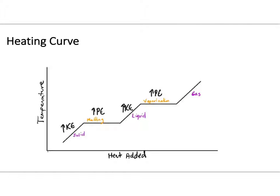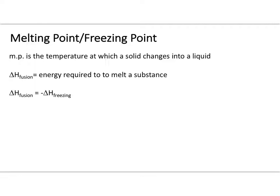This alternating process — increase in kinetic energy during a phase, then increase in potential energy during a phase change — continues along the entire heating curve. On a cooling curve, the same process occurs in reverse: instead of increases in kinetic and potential energy, we see decreases in both.